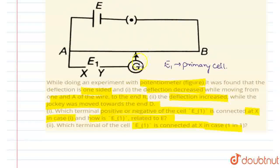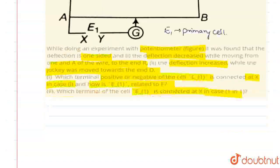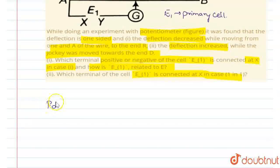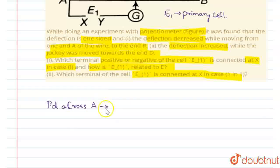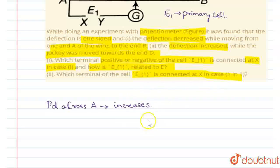Now, in the lower part of the circuit — that is, in the primary circuit — the current decreases and the potential difference across A increases. If the current decreases in the primary circuit, the potential difference across A also increases. When current decreases, potential difference increases. So when the potential difference increases, the deflection of the galvanometer becomes one-sided and the deflection will decrease, because whichever end has a higher potential will have more deflection.